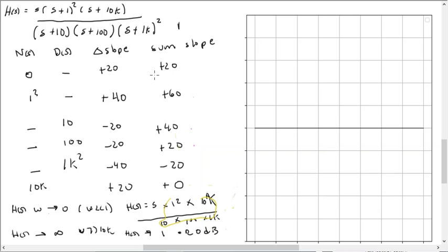So the sum of those slopes would be 20. Then when we have the pole at minus 1 repeated, we're going to have plus 40, which then when we sum them together, we'll be having a 60 dB per decade slope.